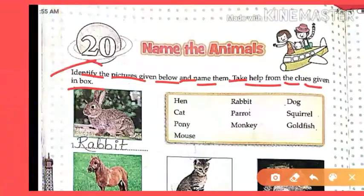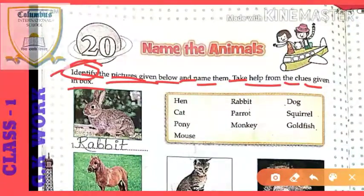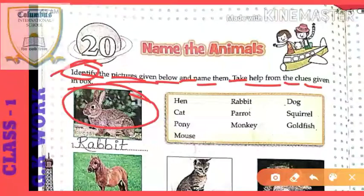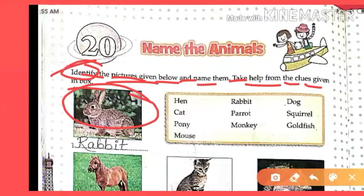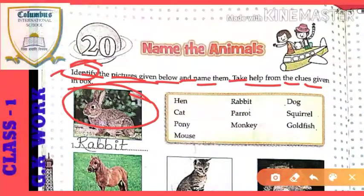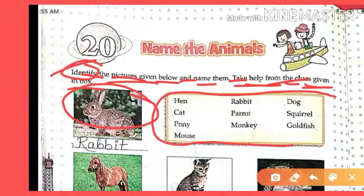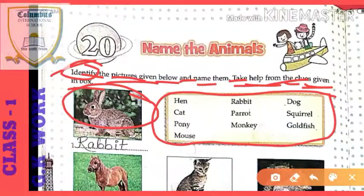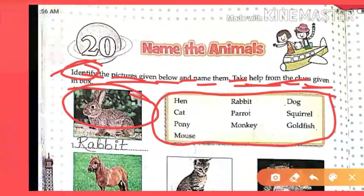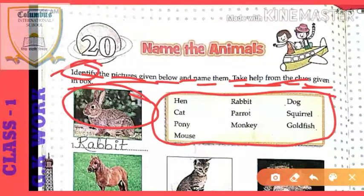Your exercise is: identify the pictures given below and name them. Take help from the clues given in the box. Some pictures are given here which you have to guess and identify — what type of animals are these and what are their names? After identifying, write their names. There is a help box here with clues; use the clues to identify the pictures, take the name from the box, and fill it in.